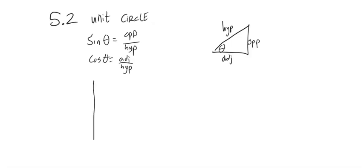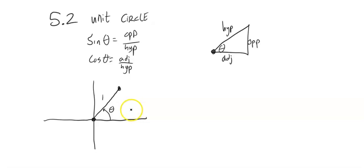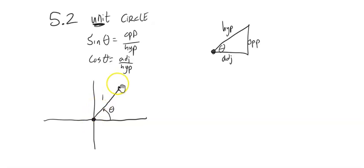I want to nest that triangle in a coordinate system. This point at the origin is (0,0). Our rotation is always going to start from there. I'm going to make the hypotenuse 1, and that's the unit part of the unit circle — we're going to think about this rotating all the way around to make a full circle. The unit means the radius is 1.